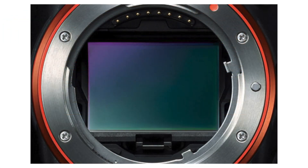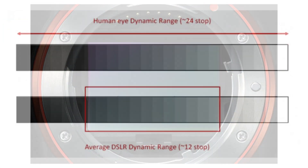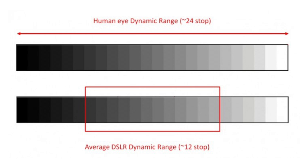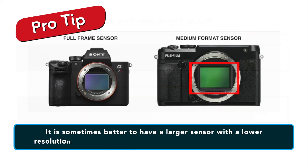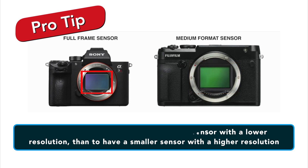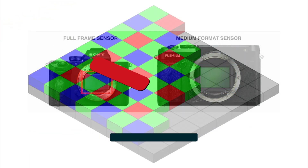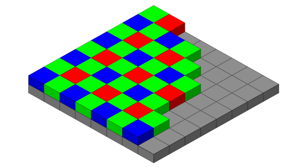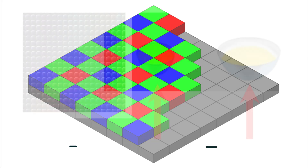One of the many important things that sensor size affects is the dynamic range of the digital camera. This is why it is sometimes better to have a larger sensor with a lower resolution than to have a smaller sensor with a higher resolution. This has to do with the size of the pixels on the sensor that are used to collect light.